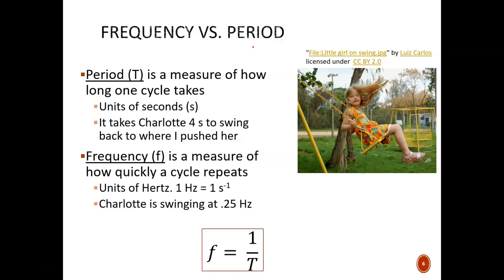Period is simply a measure of the time it takes for a cycle to repeat, so it has units of seconds. If I push Charlotte on a swing and she returns to my hands every four seconds, then the period is four seconds.